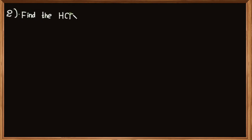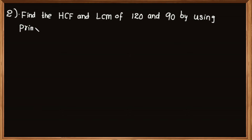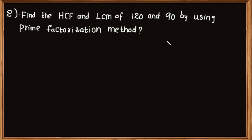Problem number 2: find the HCF and LCM of 120 and 90 by using the prime factorization method. The given numbers are 120 and 90. First we have to write the given numbers as product of prime numbers.